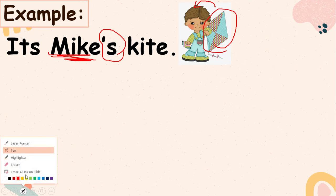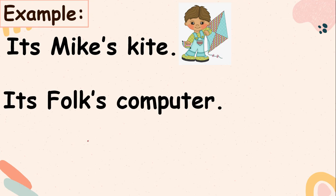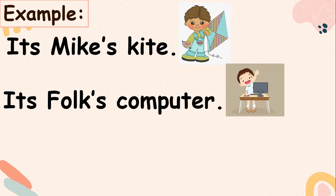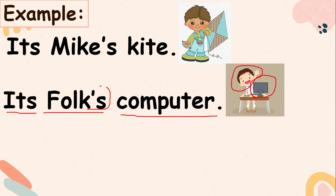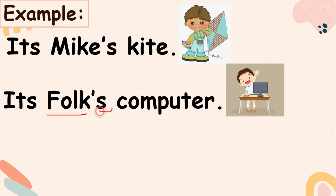Another example: this is Folk and Folk has a computer. How do we say that? We say 'It's Folk's computer,' meaning the computer is owned by Folk. The main name there is Folk; we just need to add apostrophe 's' so that other people will know the computer belongs to Folk.